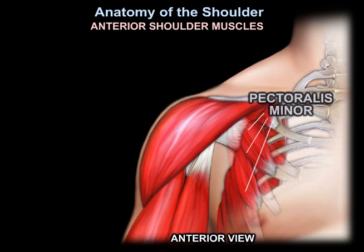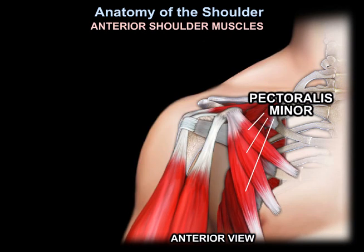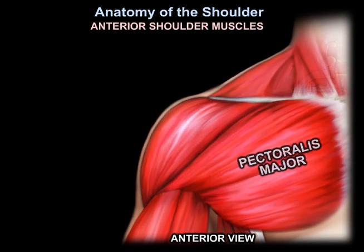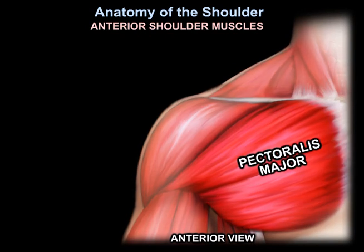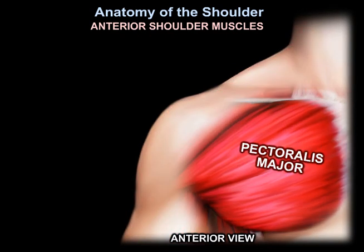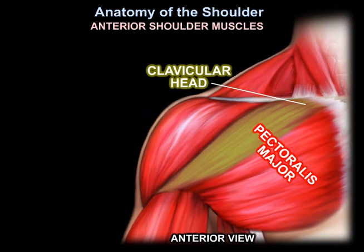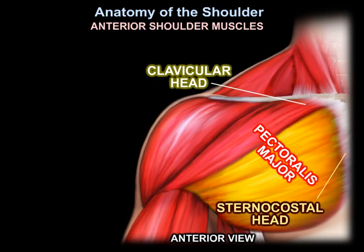This is the pectoralis minor, and this is the pectoralis major muscle. There are two heads: the clavicular head and the sternocostal head for the pectoralis major muscle.